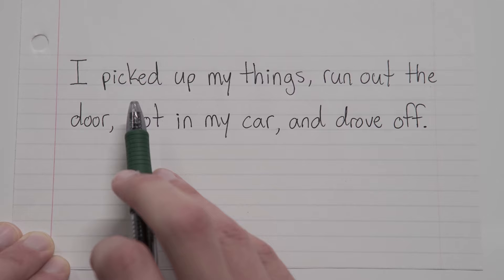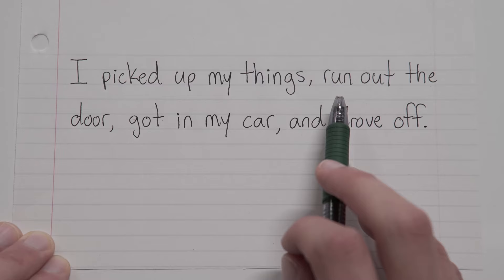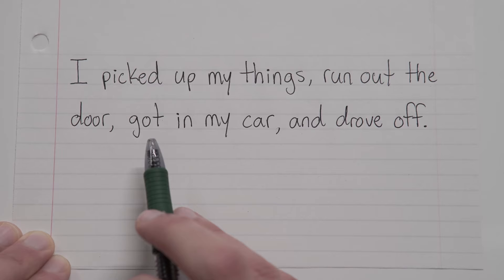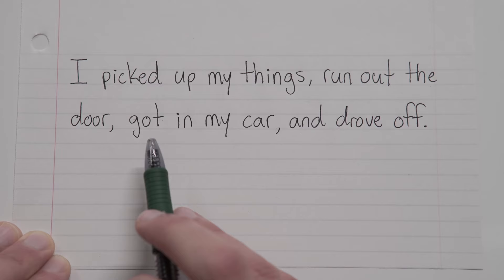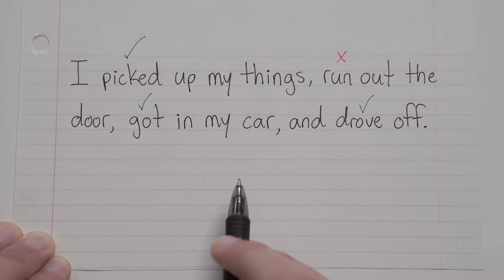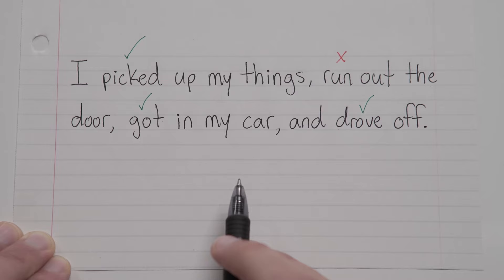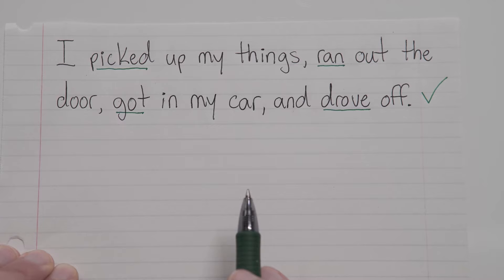Well, let's go one by one. I picked up my things. That's past tense, as in it already happened. I run out the door. Ooh, present tense, like right now. I got in my car. Okay, that's back to past tense. I drove off. Also past tense. So it looks like three of our verbs are all in the past tense, which means we need to change the last one to match the others. So the question is, how do we make run past tense? Well, simple. We change it to ran. So altogether, the correct sentence reads: I picked up my things, ran out the door, got in my car, and drove off. Boo-yah.